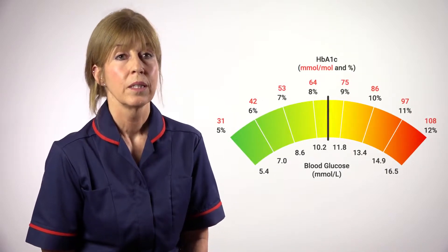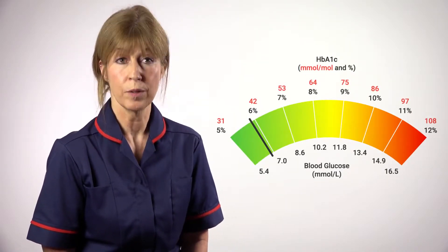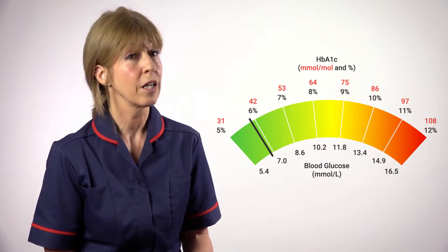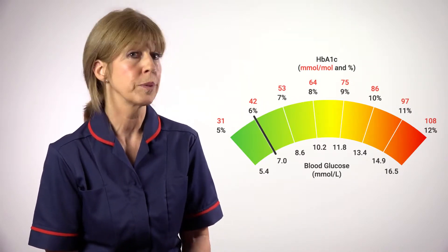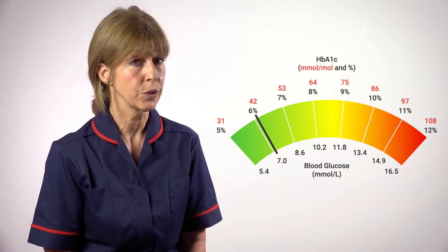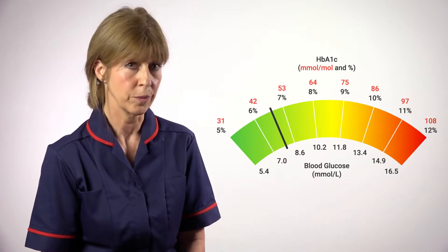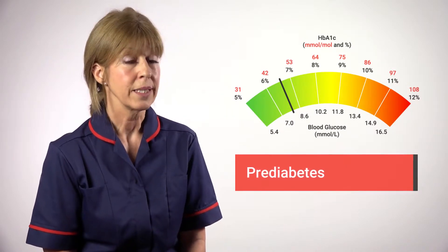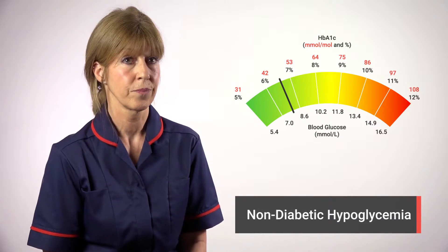A normal HbA1c result is a reading below 41 millimoles per mole. A person would be classed as high risk of diabetes if their result was between 42 and 47 millimoles per mole. This is classed as pre-diabetes, or non-diabetic hyperglycaemia.